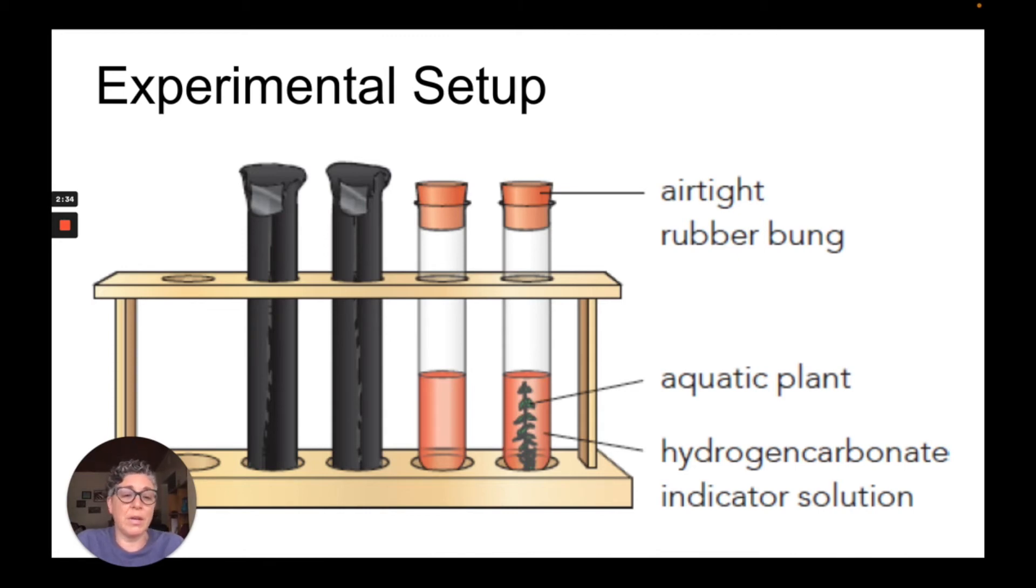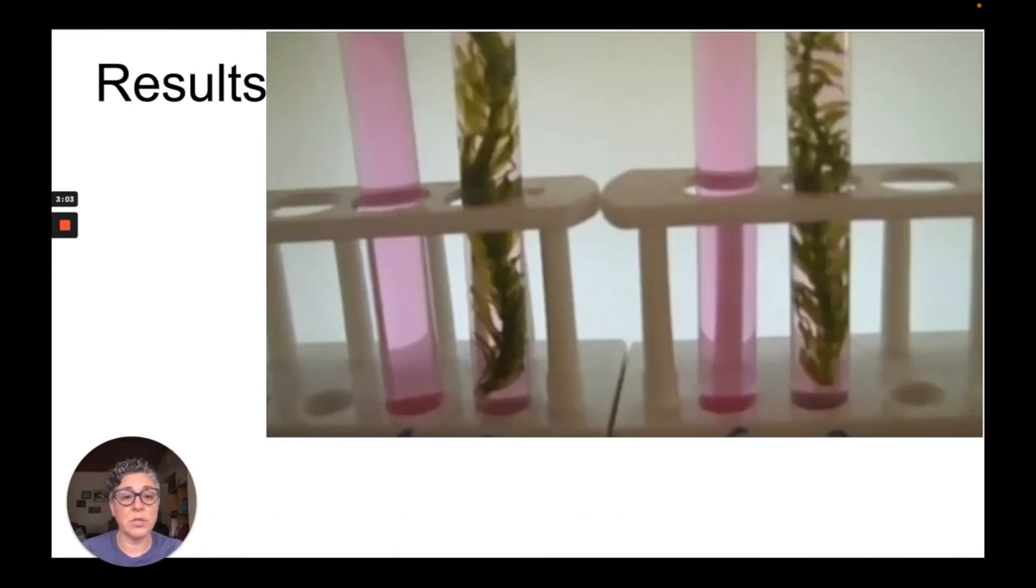One is going to have an aquatic plant and the other one is not going to have any plant in it at all, and both of them will have solutions of hydrogen carbonate indicator in them. The two test tubes under the black paper are going to look identical to the two test tubes under the light. This is left for a period of time and let's see what our results look like.